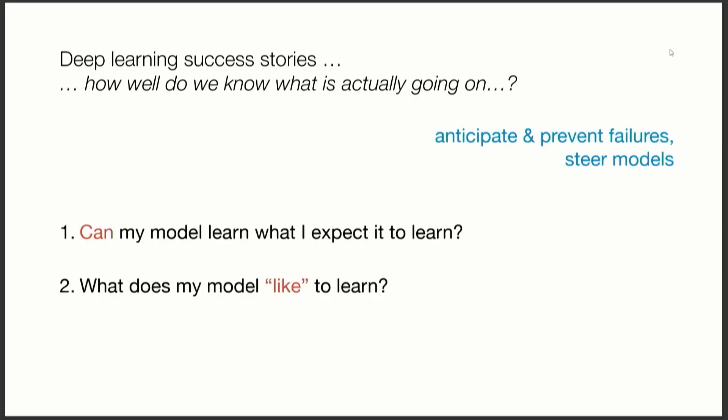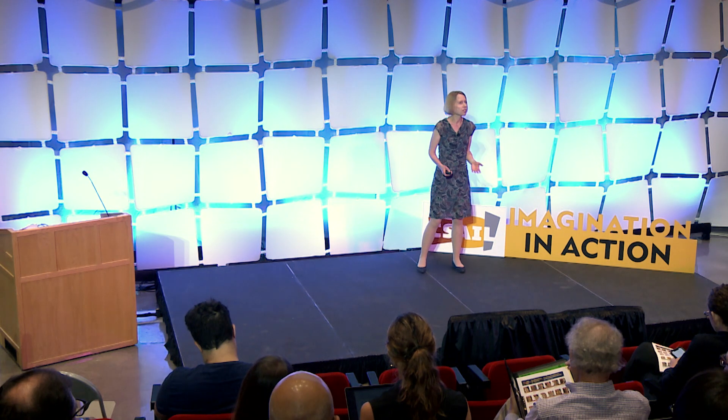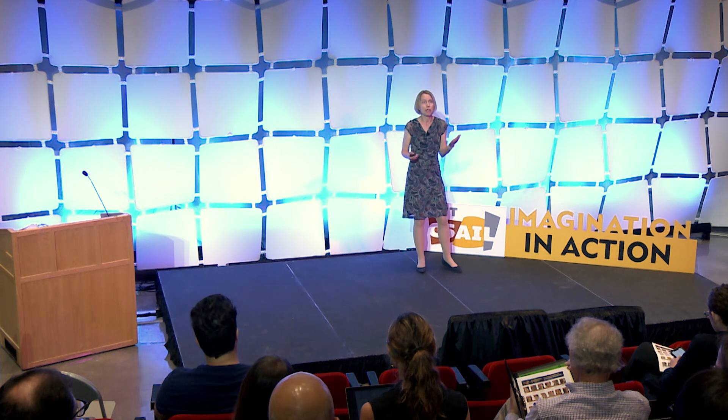So why would a neural network fail? For example, because it actually can't learn what I want it to learn — that's still an open question. Another example is that maybe the model actually fits my data well, but it does so in a way that's very different from what I think it's doing. These are obviously two very big questions.